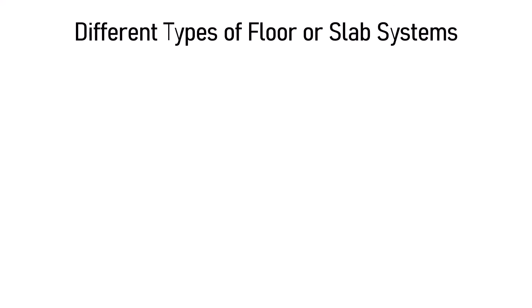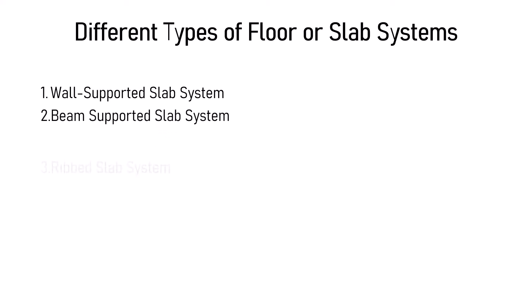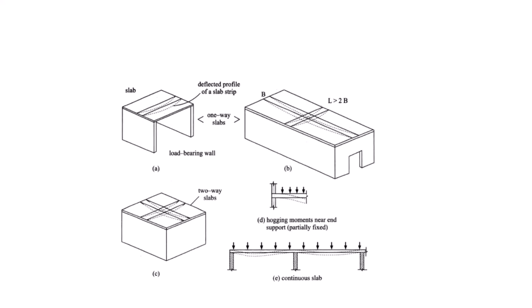Different Types of Floor or Slab Systems for Buildings. In a cast-in-situ RCC building, a slab system can be of the following types: a wall-supported slab system, a beam-supported slab system, a ribbed slab system, a flat plate system, and a flat slab system.